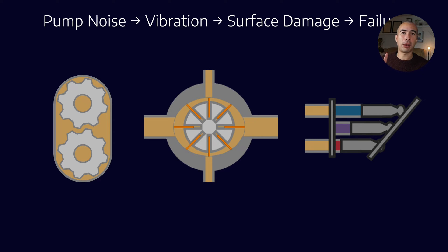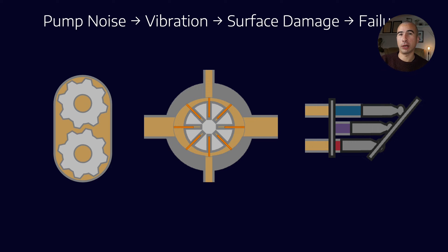Now just having pump noise itself is not necessarily a sign that you have micro-dieseling because it could really be two things. It could be cavitation which happens on the suction side or it could be micro-dieseling which happens on the discharge side. So let's talk a little bit about what micro-dieseling is specifically and then we'll be able to see how it differs from cavitation.